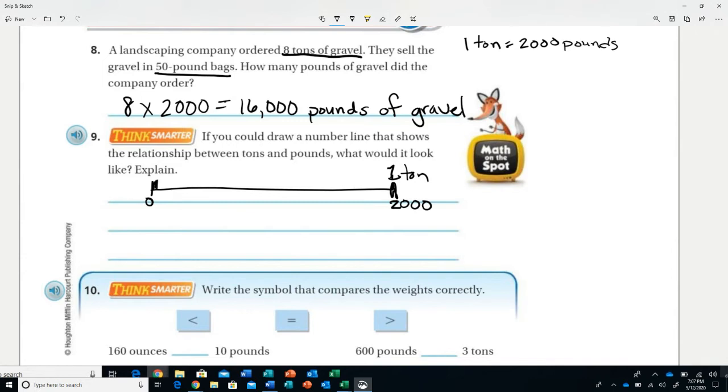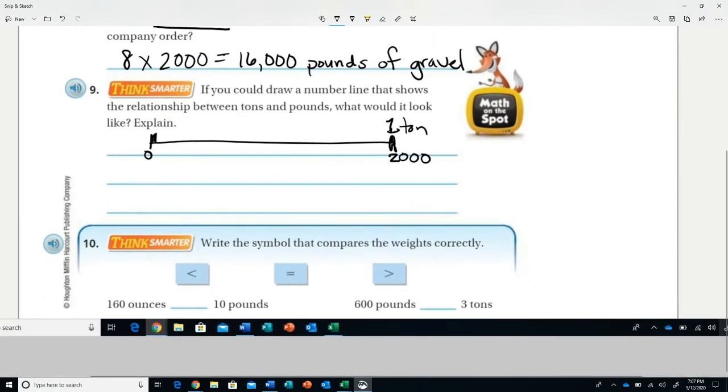Number 10: write the symbol that compares the weight correctly. 160 ounces versus 10 pounds, and 600 pounds versus 3 tons. I'm going to do 600 pounds to 3 tons because 3 tons is 6,000 pounds, so I know this is going to be less than. 600 pounds is less than 3 tons. Now 160 ounces - I really, really, really like that they used 16 here.